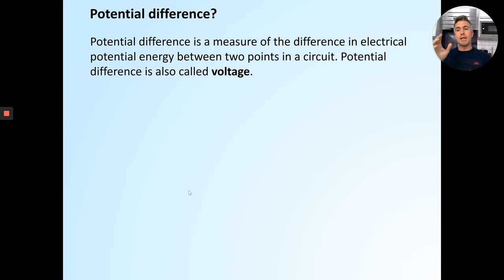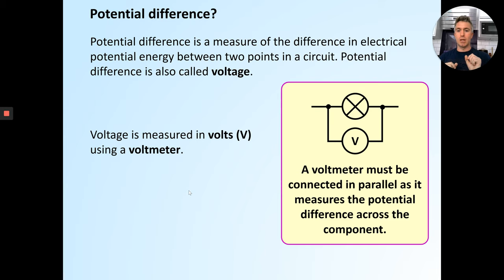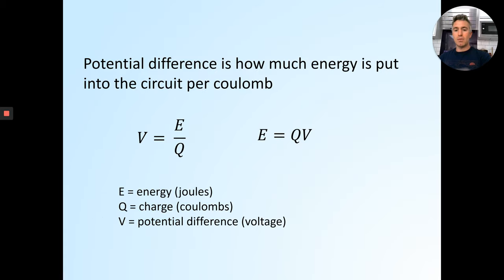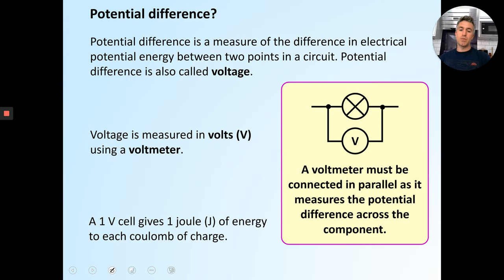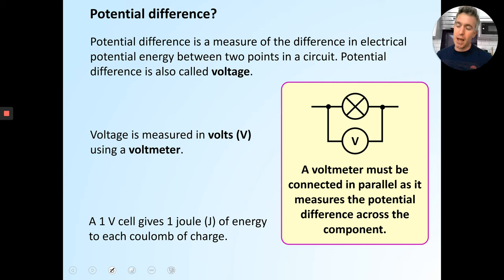It's called potential difference because it has to be measured at two different points in the circuit. You measure the potential difference with a voltmeter, and you must put the voltmeter across two different points. If you put the voltmeter in the circuit in parallel, it will read the potential difference across a component. If you put the voltmeter in series, the circuit won't work properly. So potential difference must be measured across two places and it's measured in volts.